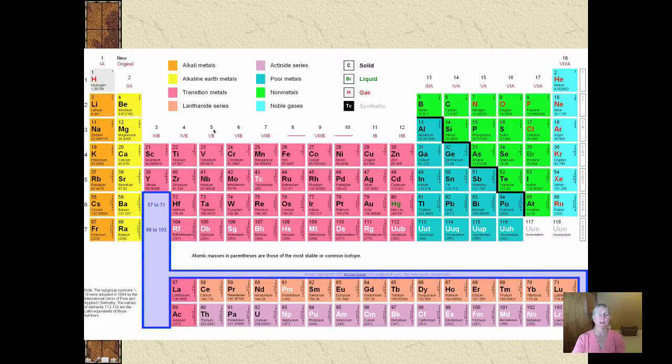We go from Arabic numbers 1 through 18, or you can go from Roman numerals with letters 1 through 8. We'll talk about the difference between a Roman numeral with an A or a B. Metals are on the left, non-metals are on the right, and on the metalloid staircase we have the metalloids. Elements whose properties are intermediate between those of metals and non-metals.